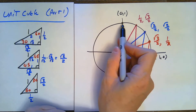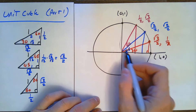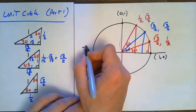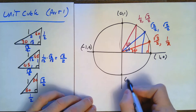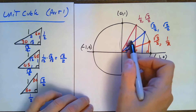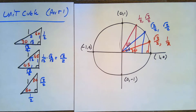What angle would (0, 1) represent? That would be a 90-degree angle. Then (−1, 0) is at 180 degrees, and (0, −1) is at 270 degrees, which is 360 degrees around. It's better to think about these in terms of radians.